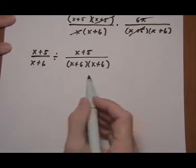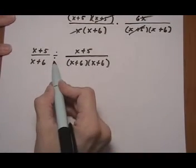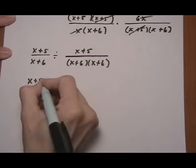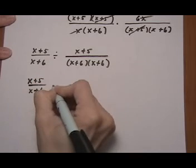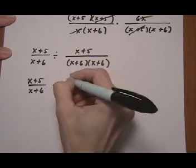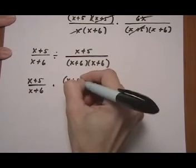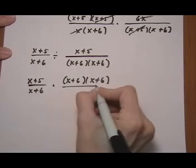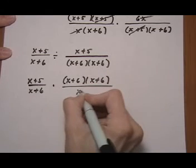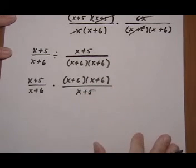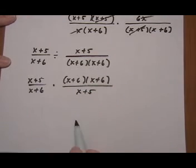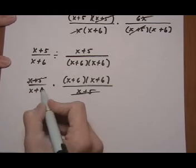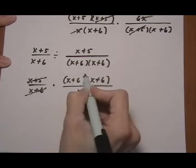We took care of parentheses and now we're going to go ahead and change to multiply and flip. So we have x plus 5 over x plus 6, times — flip it — x plus 6 over x plus 5. Now we cancel: x plus 5 top and bottom, x plus 6 top and bottom.